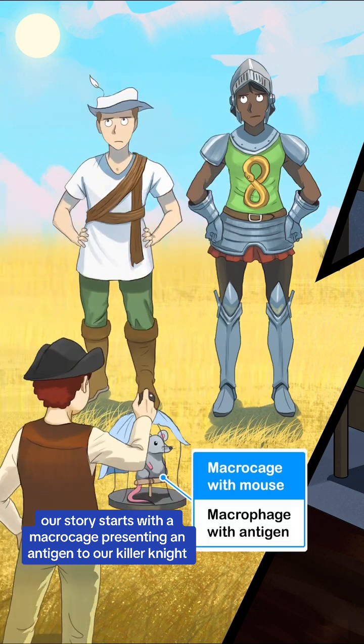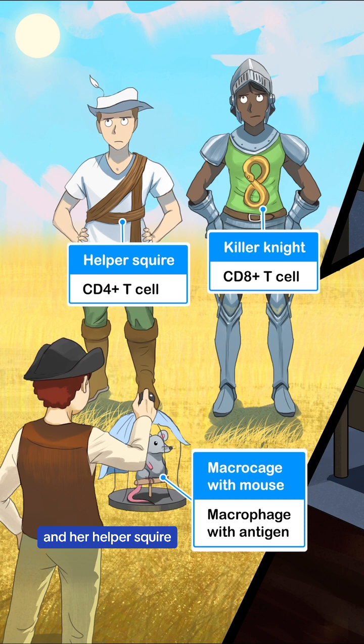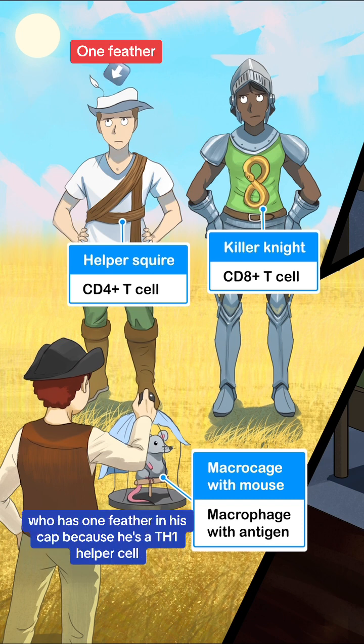Our story starts with a macro cage presenting an antigen to our killer knight, our CD8 T-cell, and her helper squire, the CD4 T-cell, who has one feather in his cap because he's a Th1 helper cell.